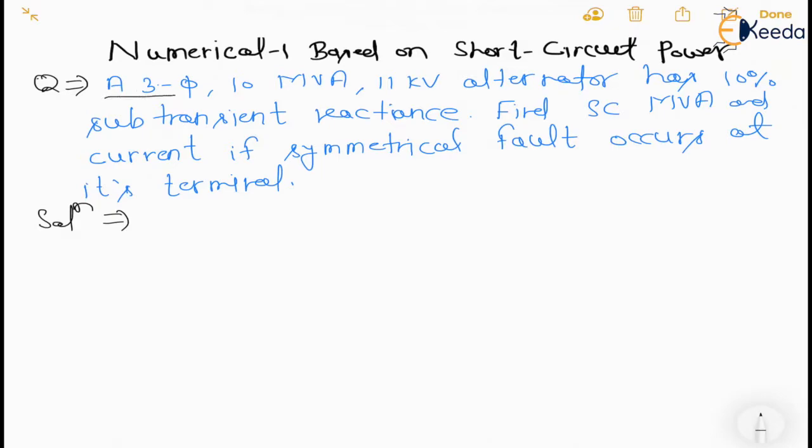The given question is: a three phase 10 MVA, 11 KV alternator has 10% sub transient reactance. Find short circuit MVA and current if symmetrical fault occurs at its terminal.